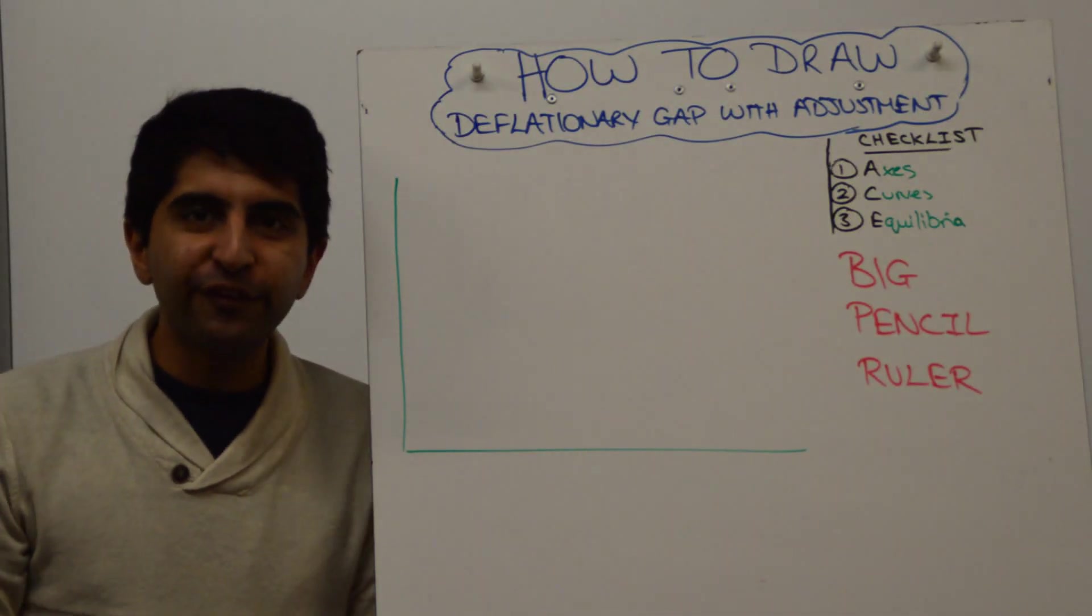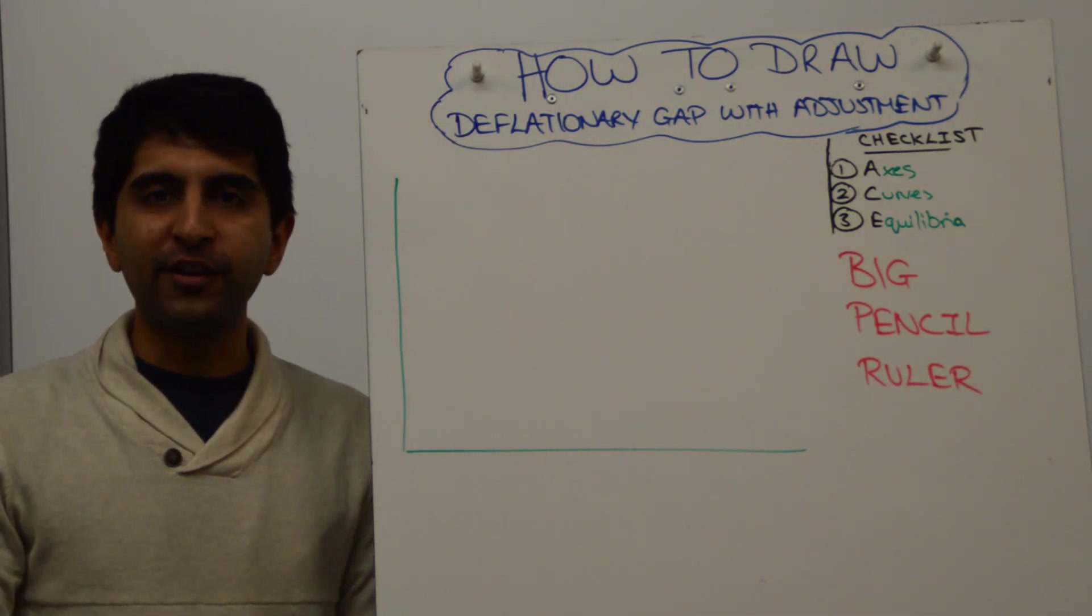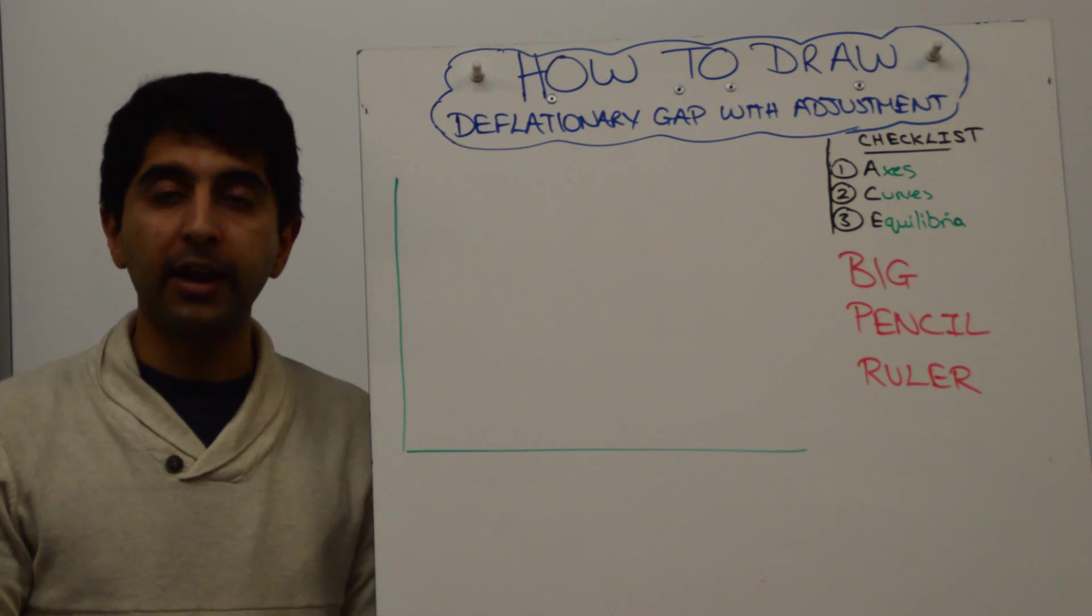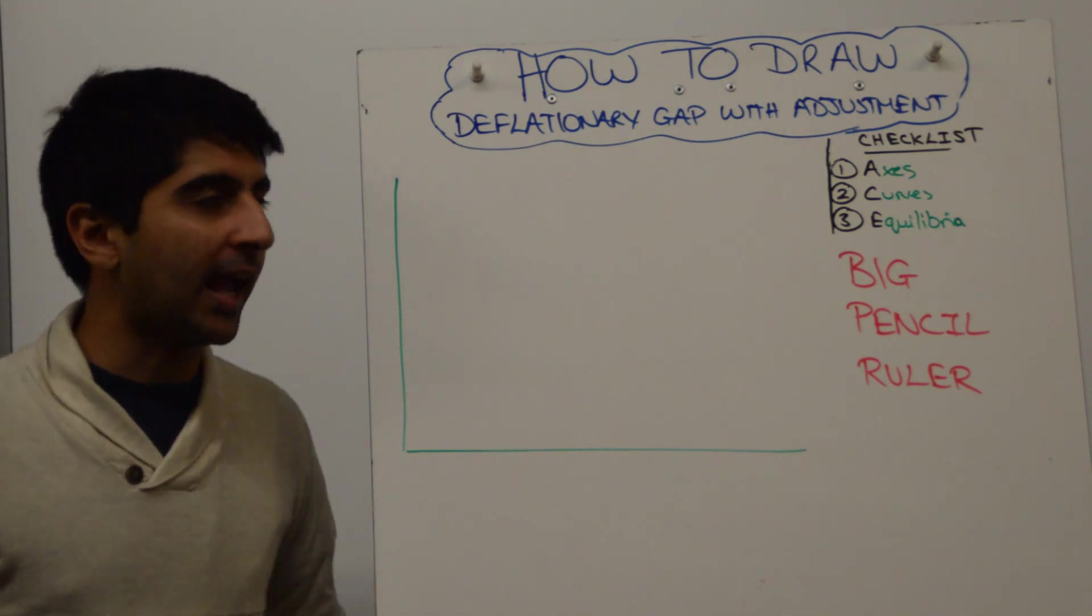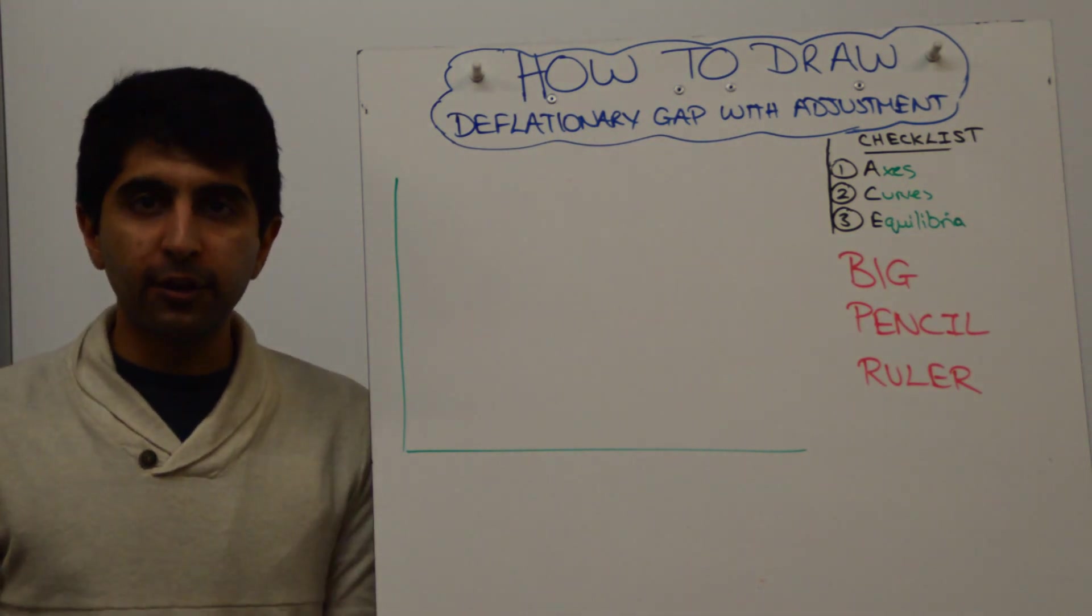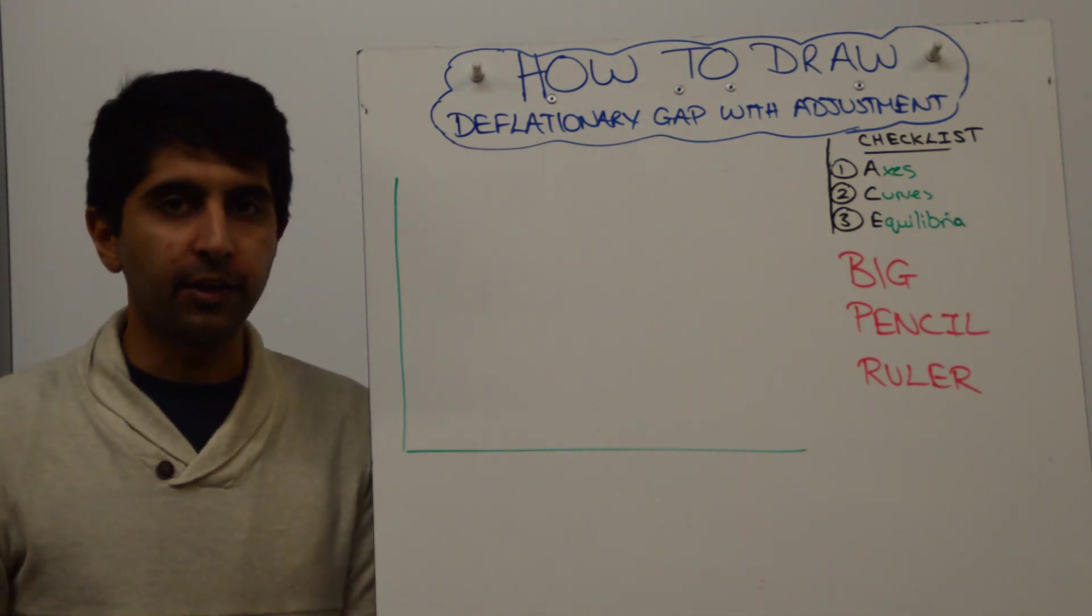Hi everybody! You want to show the full classical model of aggregate demand and aggregate supply in terms of how that model will correct deflationary gap. Well, let's go through how to construct this quite detailed and technical diagram.